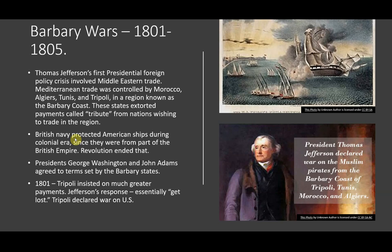After the Revolution, the U.S. was no longer part of the empire, so the British Navy did not protect American shipping. Presidents George Washington and John Adams agreed to terms set by the Barbary states for payments of tribute, so American ships would be left alone and able to trade. In 1801, however, Tripoli insisted on much greater payments.